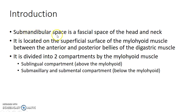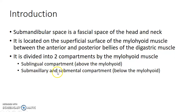The submandibular space is a facial space of the head and neck. It is located on the superficial surface of the mylohyoid muscle, between the anterior and posterior bellies of the digastric muscle. The submandibular space is divided into two compartments by the mylohyoid muscle: the sublingual compartment, located above the mylohyoid, and the submaxillary and submental compartment, located below the mylohyoid muscle.